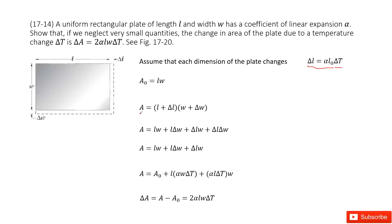After the temperature increases, the final length for L becomes L plus delta L, and W becomes W plus delta W. We expand this expression. The term delta L times delta W is super small, so we can ignore it. After ignoring it, A equals LW plus L·delta W plus delta L·W. And LW is just A0.